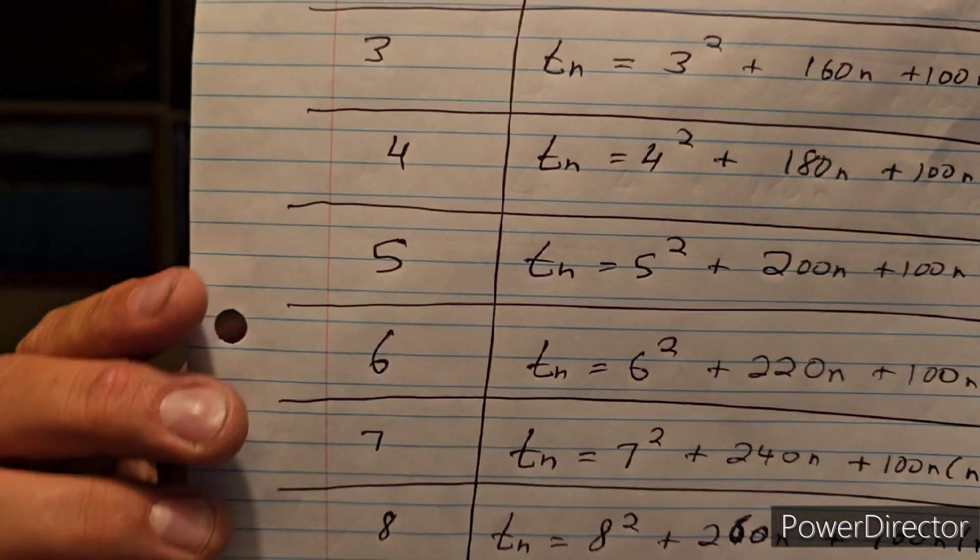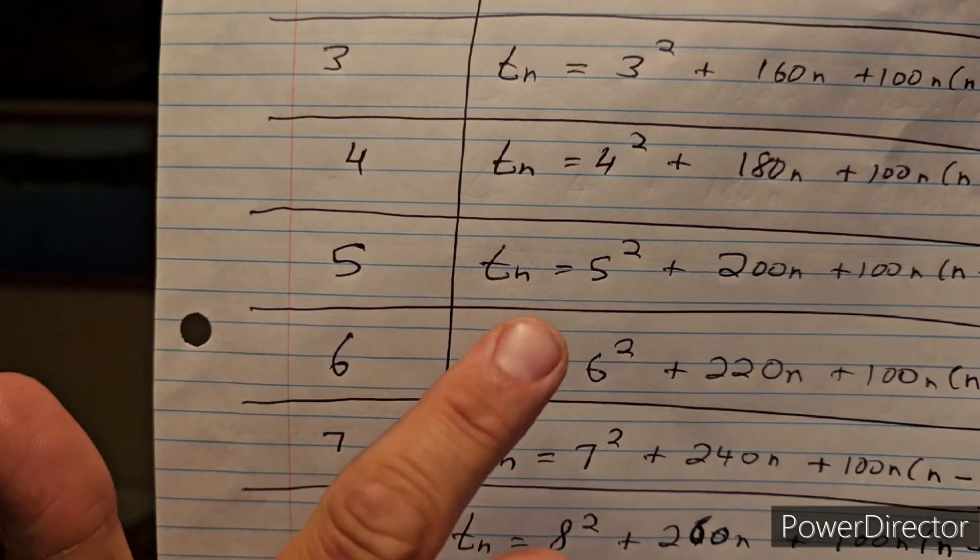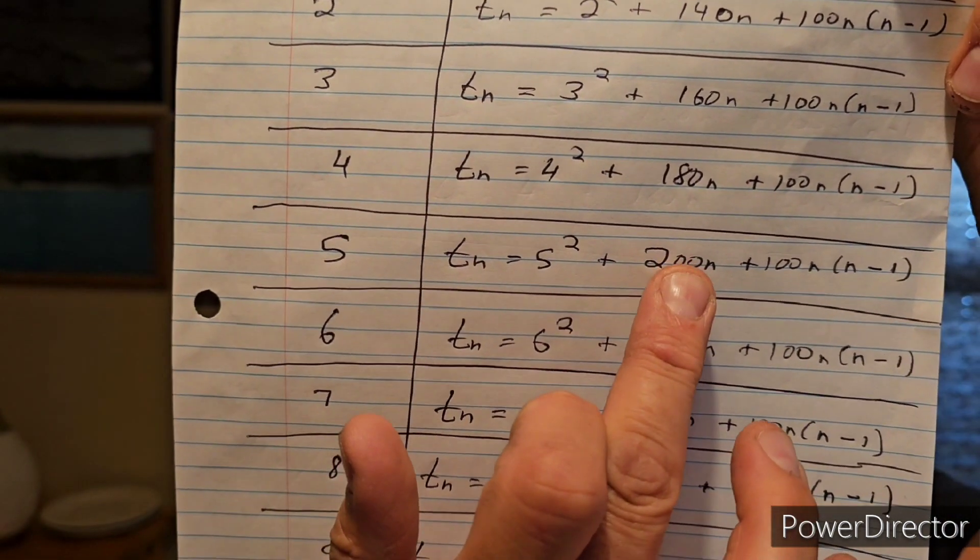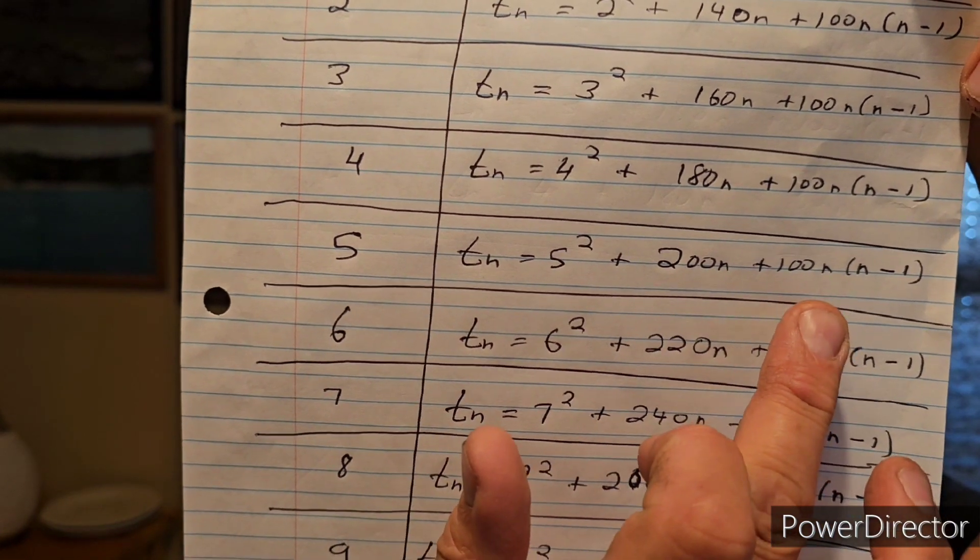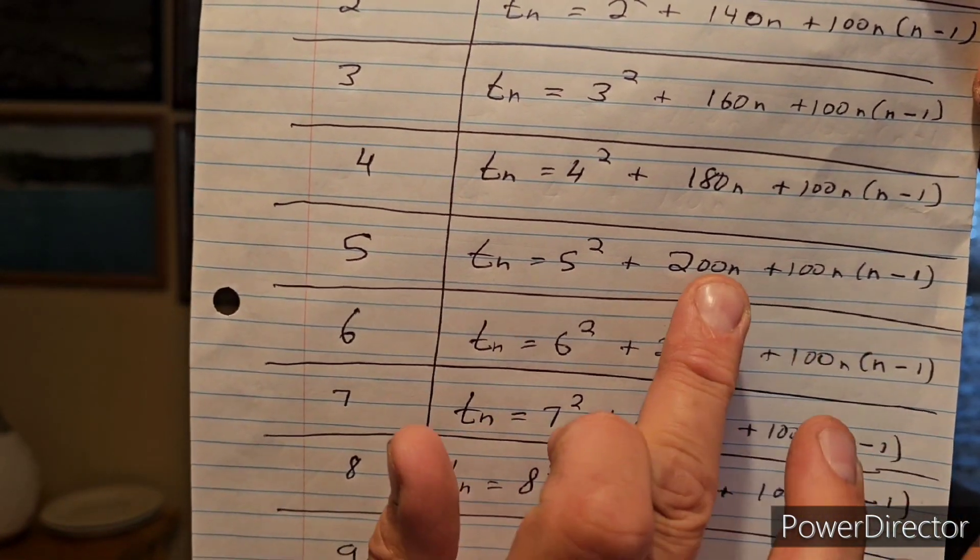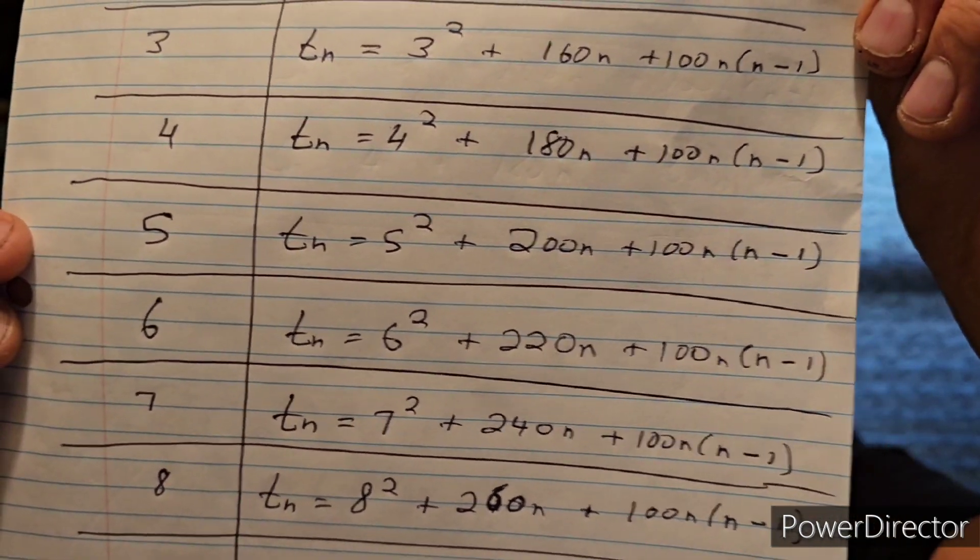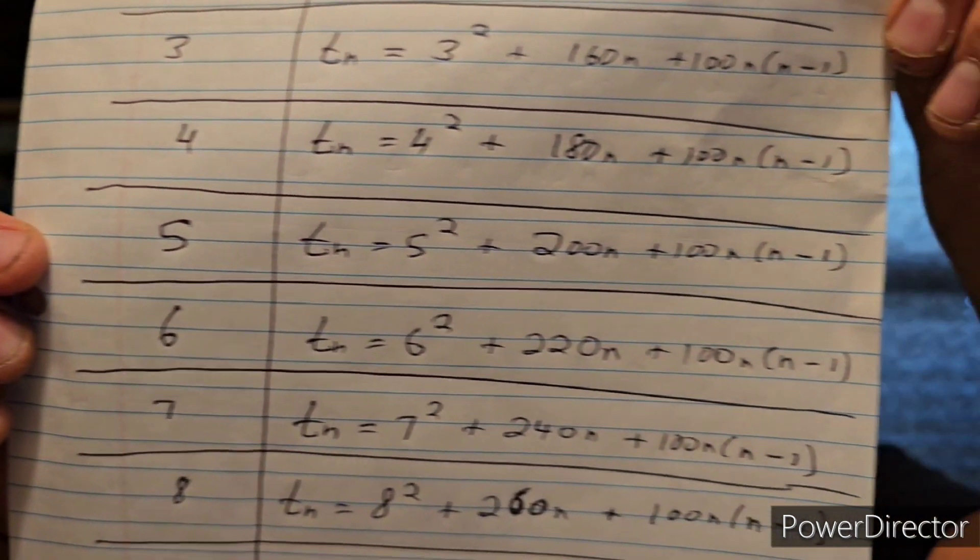Let's do a number ending in 5. Let's do 25. So for 25, that means you'd be T2 for this one here. And it would be 200 times 2 plus 100 times 2. So 200 plus 400 plus 25. And you got it. That is 625. That is 25 squared.